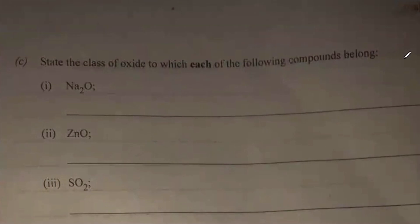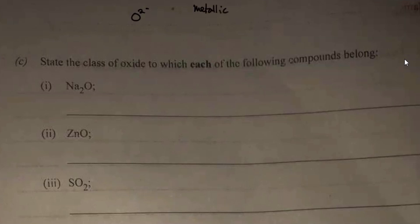We have to state the class of oxides to which each of the following compounds belongs. Oxides are binary compounds of oxygen that contain the oxide ion, O²−. There are two major types: metallic oxides and non-metallic oxides. Under metallic oxides, you have the basic oxide and the amphoteric oxide. Under non-metallic oxides, you have the acidic oxide and the neutral oxide.